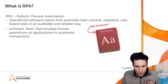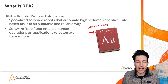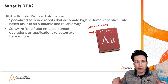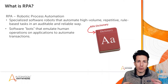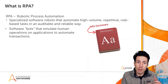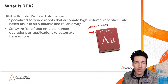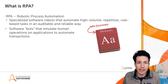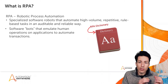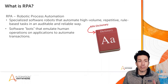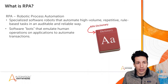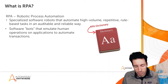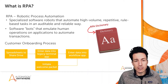When we think about that, we think about these high-volume tasks where humans are asked to play the bridge between two different applications that don't otherwise have a good way of communicating with each other. We might be moving data from one application to another, or initiating transactions that couldn't be kicked off automatically. Those high-volume, repetitive, rule-based tasks are a great use case for RPA.